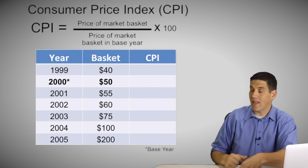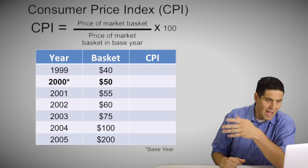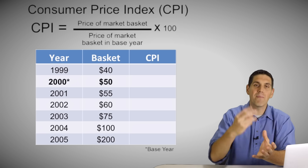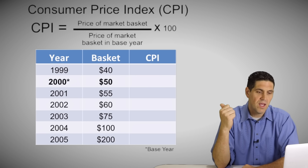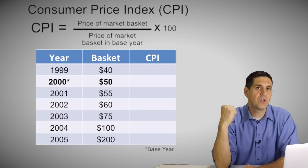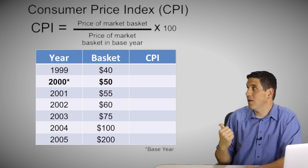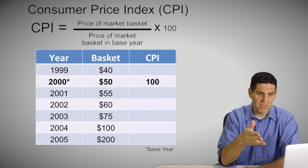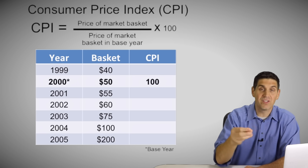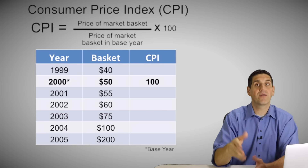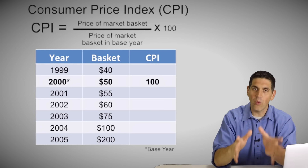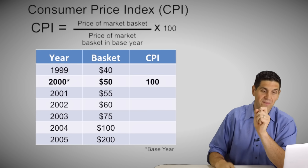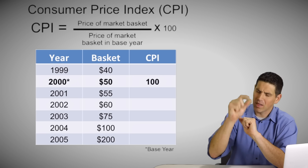Here's a list — I want you to figure out the CPI for each one of these years from 1999 to 2005, using the value of a market basket of the same goods and services. The key is we're looking at the same goods and services across all these different years. Now, before you start calculating, what will the CPI be for 2000? Notice 2000 is the base year. The value of that market basket is $50, divided by $50 — the base year value — times 100, pops out 100. The base year is always 100.